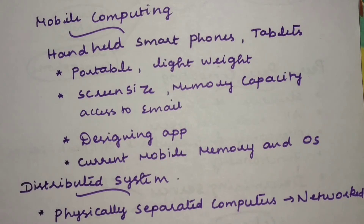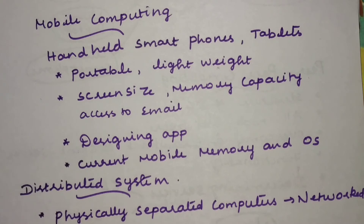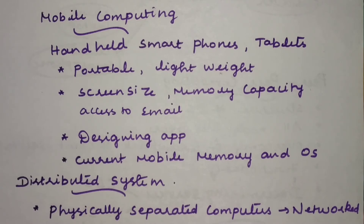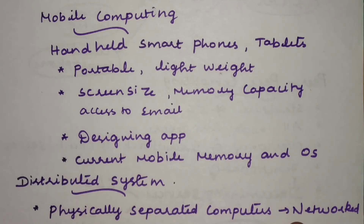The physical features of mobile computing are that devices are portable and lightweight. However, compared to desktops or laptops, the screen size and memory capacity are minimal. At the beginning of mobile computing's evolution, mobiles had very limited screen size and limited memory capacity, and web access was also somewhat minimal in those days.